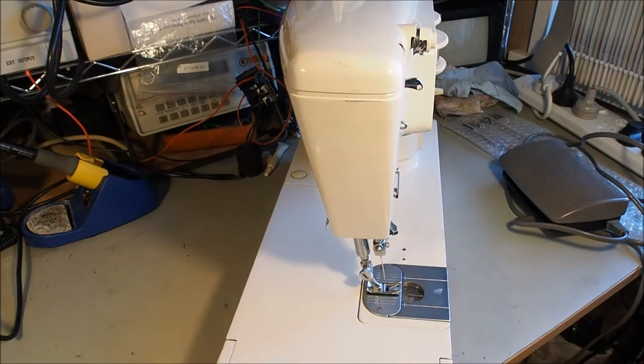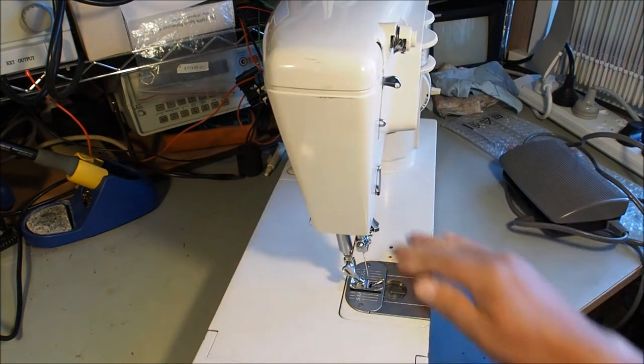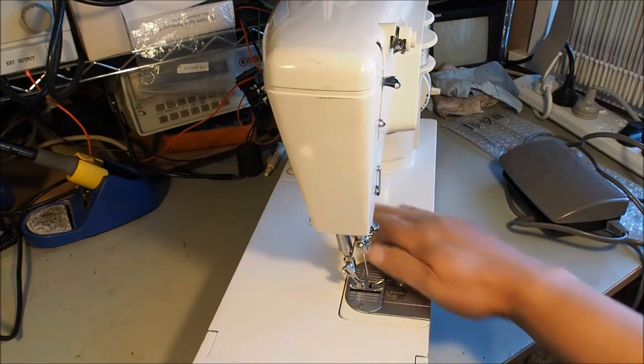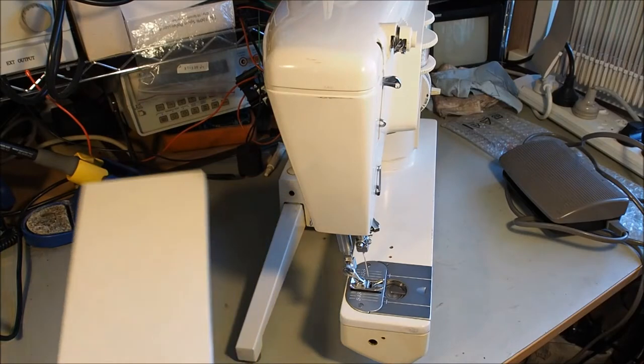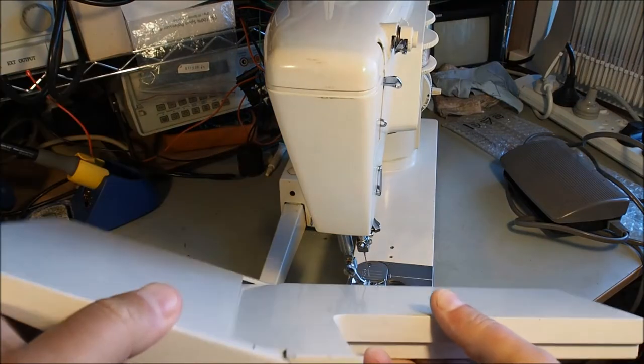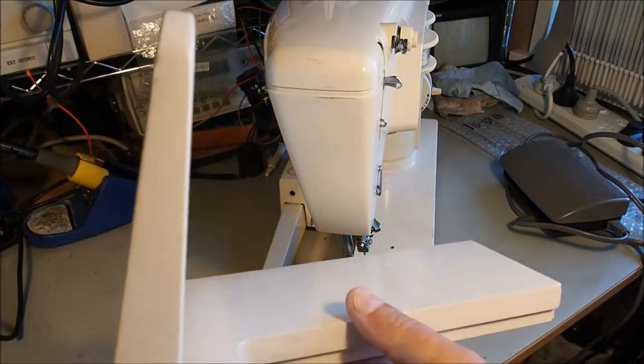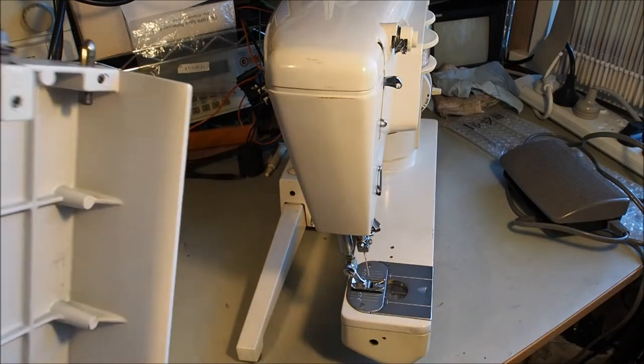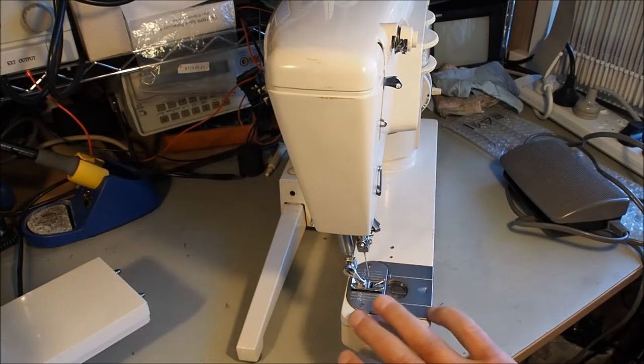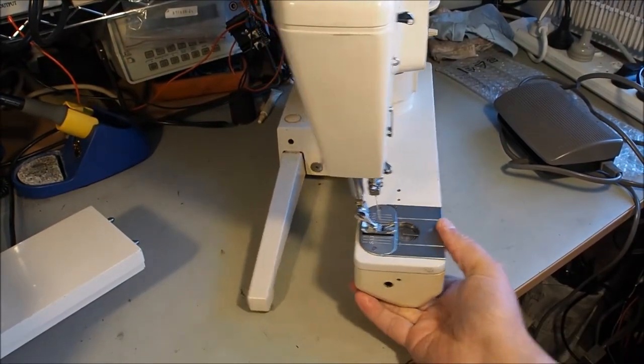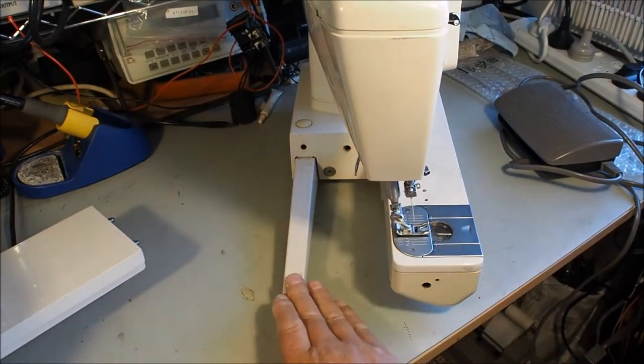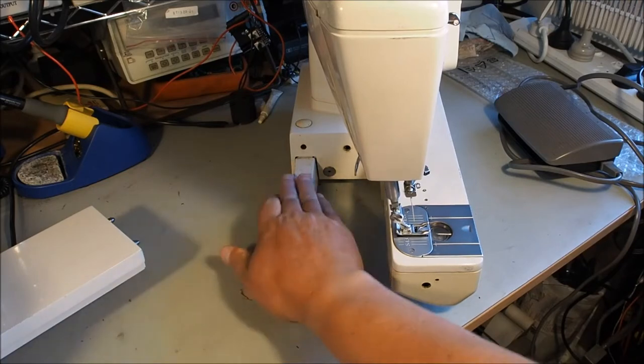This model has a cloth plate that can be removed - some call that a flatbed. Push a button at the back and it slides off, with a piece that hinges up for storage. Now we have a free arm, and you'll notice there's a stabilizer leg out the back.